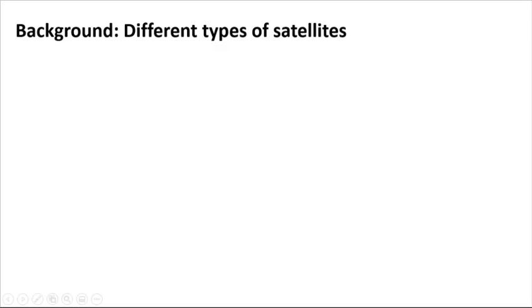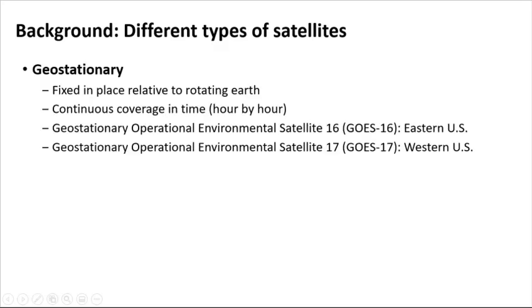We proceed now with some technical background on how satellites take environmental measurements, air pollution in particular. There are two main types of satellites deployed on which various monitoring equipment are included to measure environmental quantities. First are geostationary satellites. These are fixed in place relative to the rotating Earth, or in other words, rotate in tandem with the Earth. Because of this, geostationary satellites stay fixed in place above a particular line of sight, and therefore are able to measure a location continuously in time. The geostationary operational environmental satellites, or GOES satellites, are the U.S. geostationary satellites, with the most recent launches of the GOES-16 and GOES-17 over the last five years.